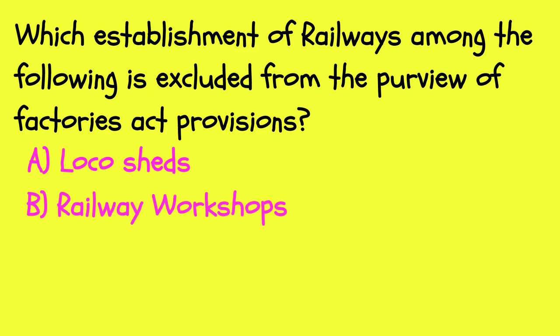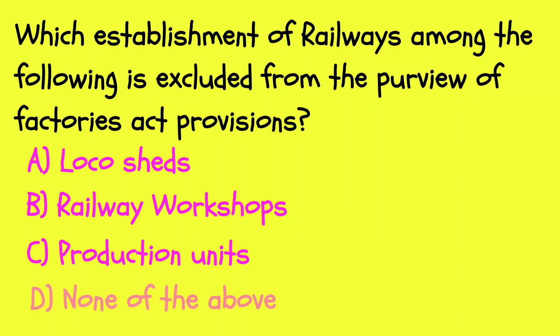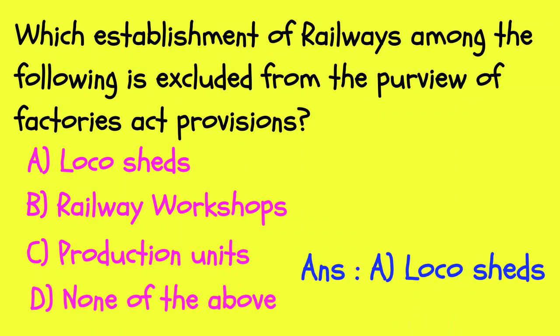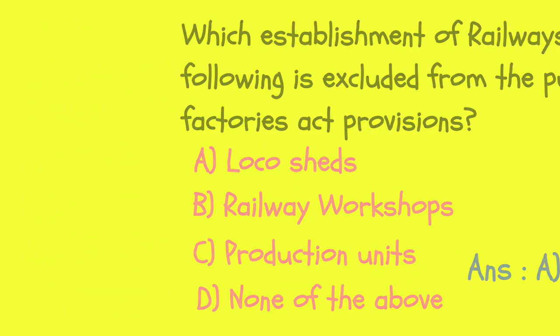Which establishment of railway is excluded from the purview of the Factory Act provisions? Option A: Locosets. Option B: Railway workshops. Option C: Production units. Option D: None of the above. The answer is A — Locosets are excluded.